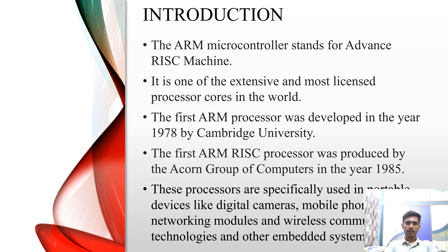Moving on to the introduction of ARM Cortex, the ARM Microcontroller stands for Advanced RISC Machine. It is one of the most extensively licensed processor cores in the world. The ARM processor was first developed in the year 1978 by Cambridge University. The first ARM RISC processor was produced by the Acorn group of computers in the year 1985. These processors are specifically used in portable devices like digital cameras, mobile phones, networking modules, laptops and wireless communication systems and some other embedded systems.